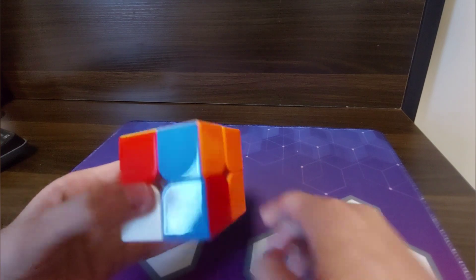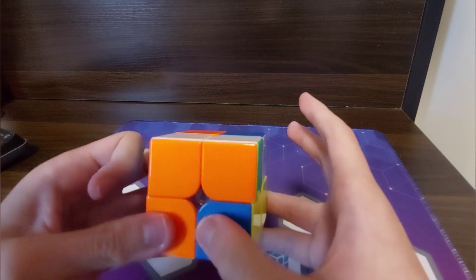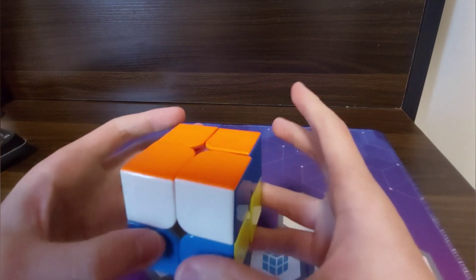And I learned that from one of Roux's videos, link in the description. So basically my full solution from here is just U2 F U2 R prime F2 R U.